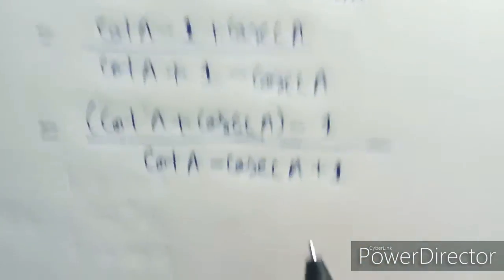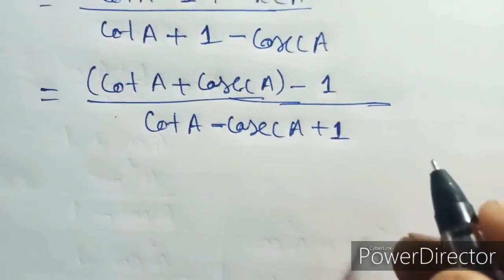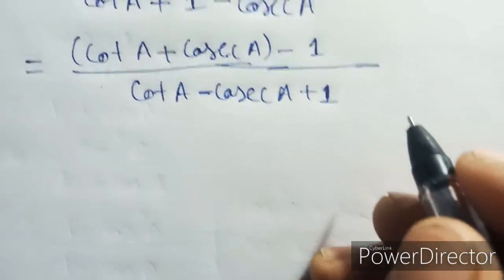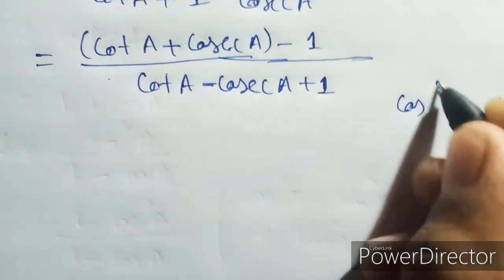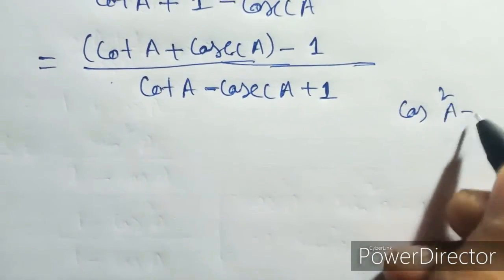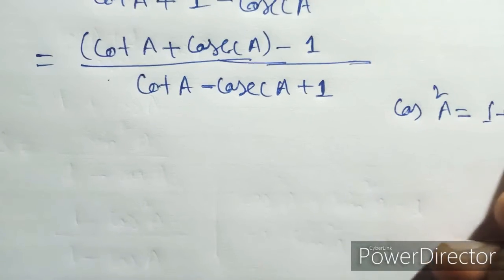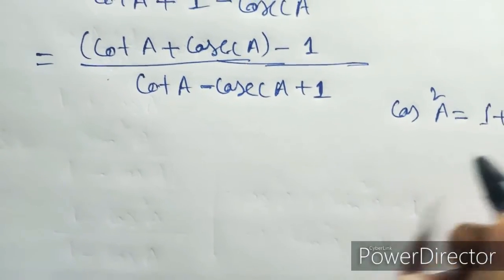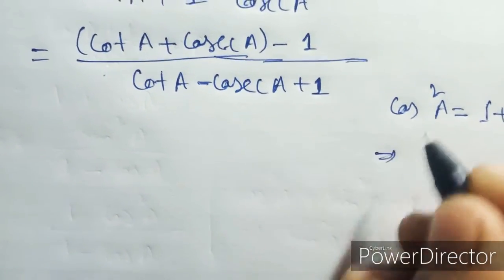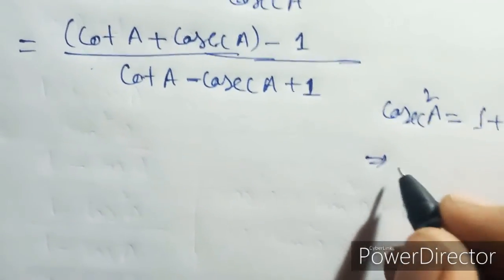Here we need to write the code. cos x square a equals 1 plus cos square a. cos x square a means...